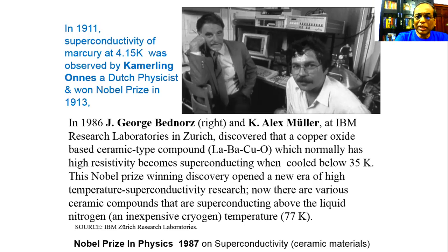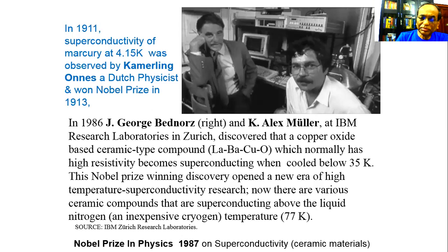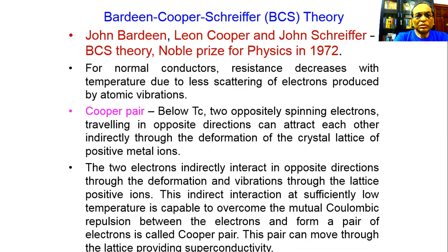Now there are various ceramic compounds that are superconducting above the liquid nitrogen temperature of 77 degrees Kelvin. The second Nobel Prize was given to Bednorz and Müller in 1987. These are for ceramic materials, not normal conductors.